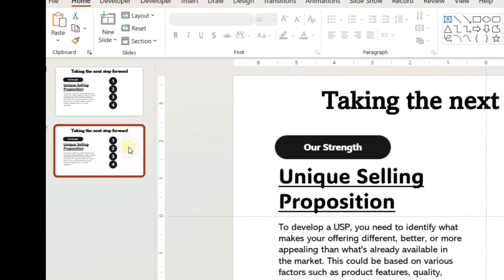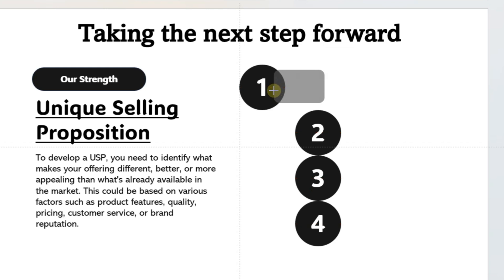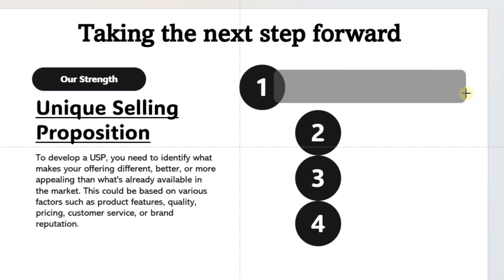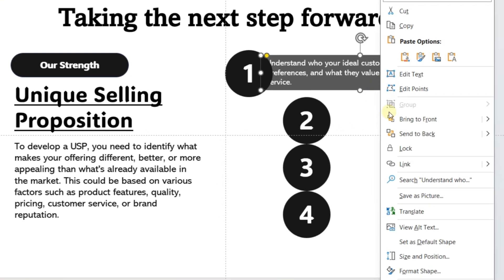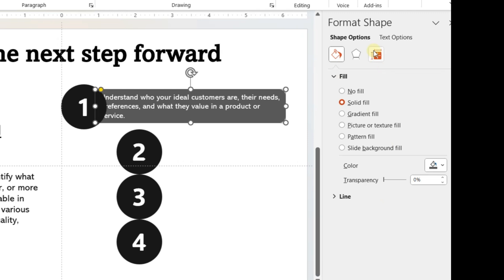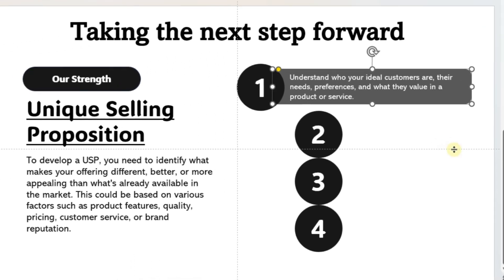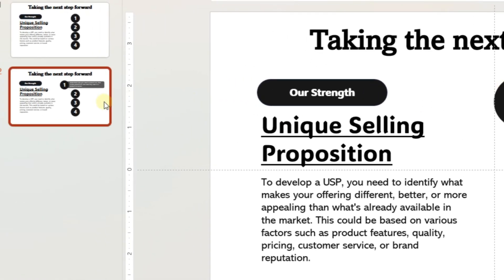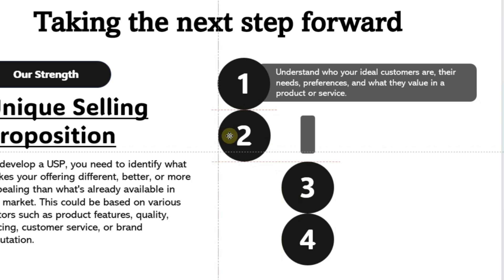Create a duplicate of the first slide. In the second slide, drag the first circle to the left in the middle of the slide area. Increase the length of the rectangular oval shape, add relevant text in the shape and format the text like the video. Once done, create another duplicate of the second slide. Drag the second circle in the middle and follow the same process. Using the same process, create slide number 4 and 5.